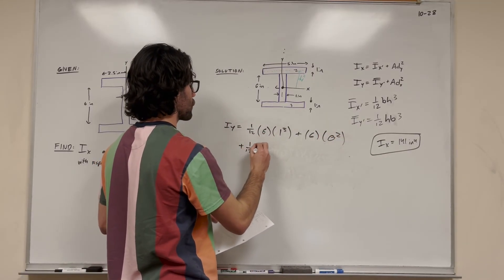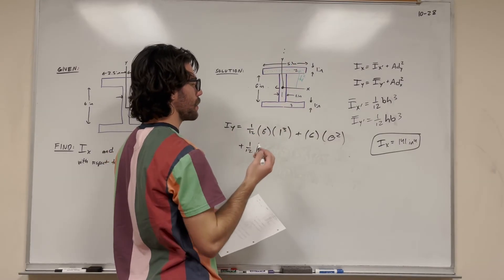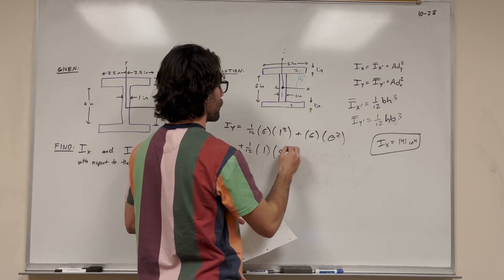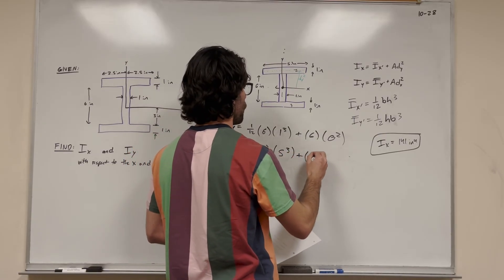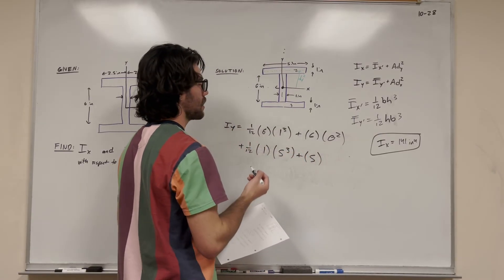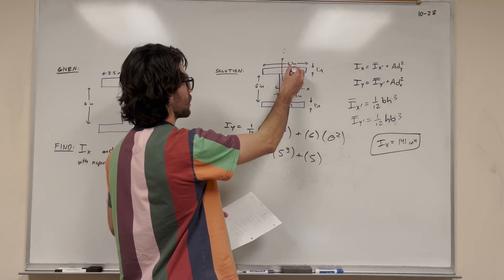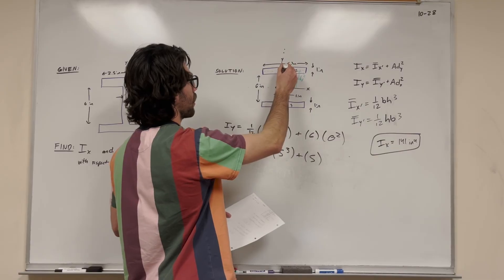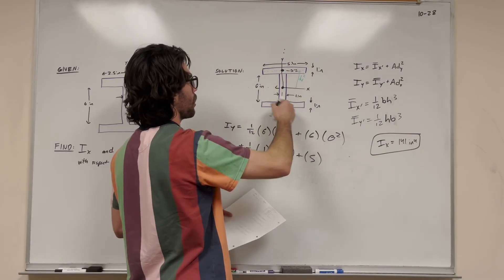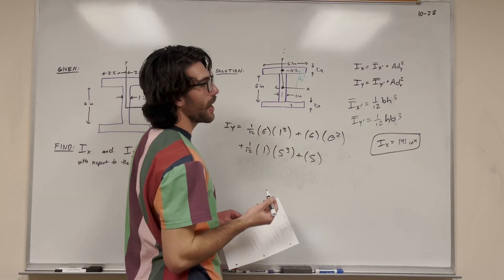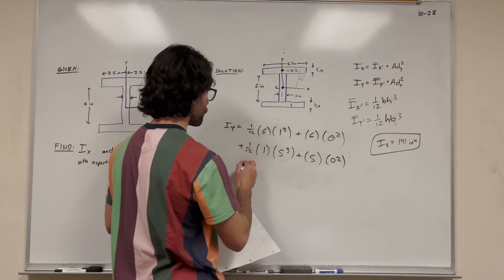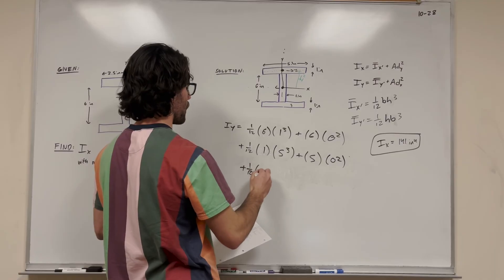For shape 2, we add 1/12. Height is 1 inch, base is 5 inches, so we do 1 times 5 cubed. Add it to its area, 1 times 5, times distance x squared. Distance x is in this direction, but that distance is again 0 because the shape's center of mass and the whole shape's center of mass both lie along the y-axis. So it's 0 squared.